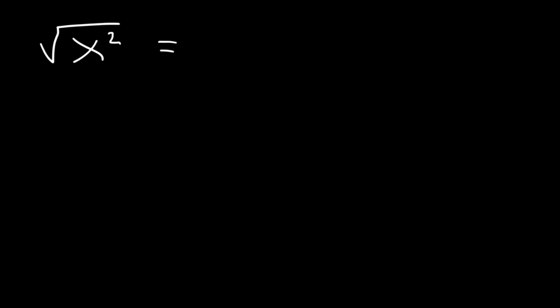What is the square root of x squared? Whenever you don't see a number in the radical, there is an invisible 2 — that's the index number. This is going to be x² divided by the index number 2, which is basically x to the first power.